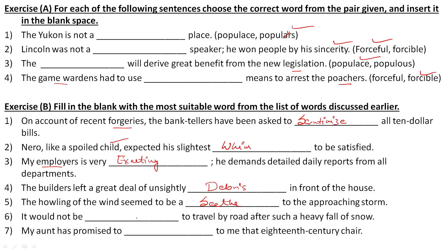It would not be dash to travel by road after such a heavy snowfall. It would not be wise to travel — so the word we learned for this is 'feasible.'